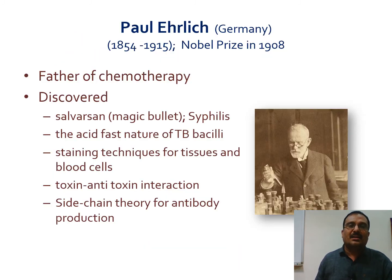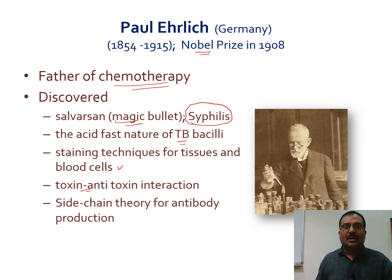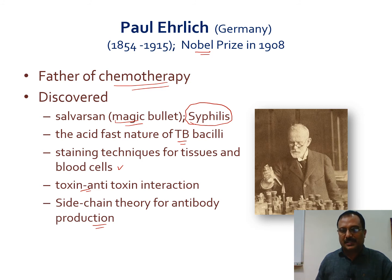Paul Ehrlich from Germany won the Nobel Prize in 1908 and is considered the father of chemotherapy because he discovered Salvarsan, also known as the 'magic bullet,' for the treatment of syphilis. He also discovered the acid-fast nature of tuberculous bacilli, introduced staining techniques for tissues and cells, proposed the antitoxin-toxin interaction, and proposed the side chain theory of antibody production.